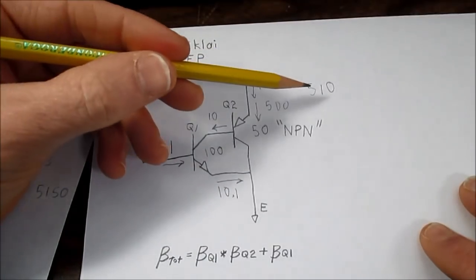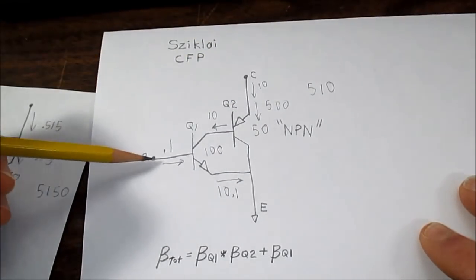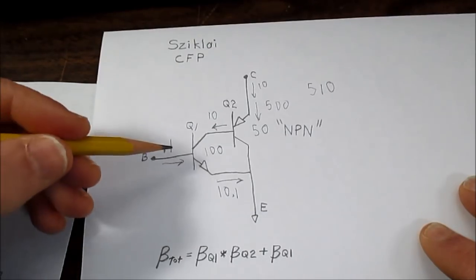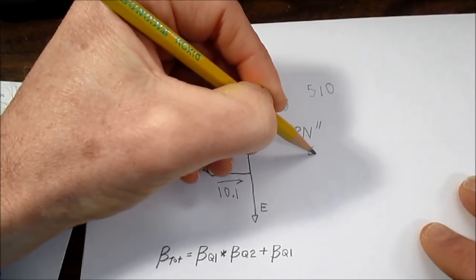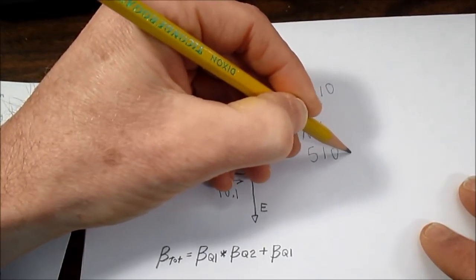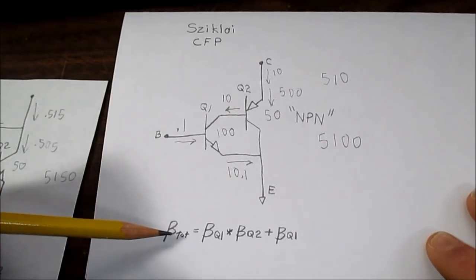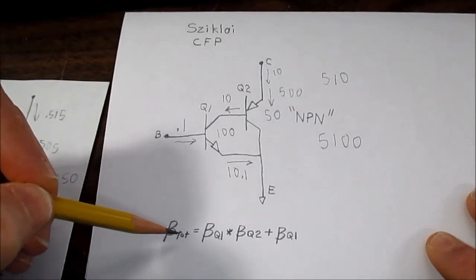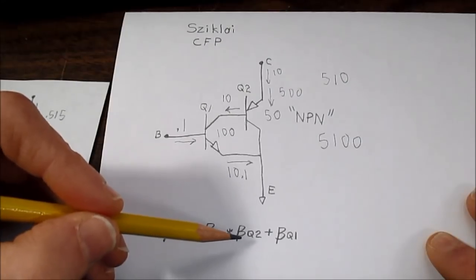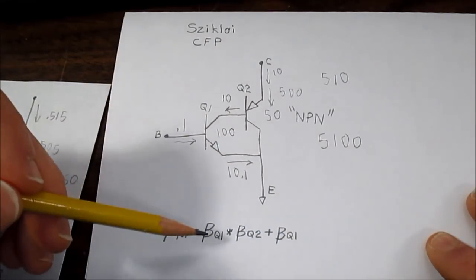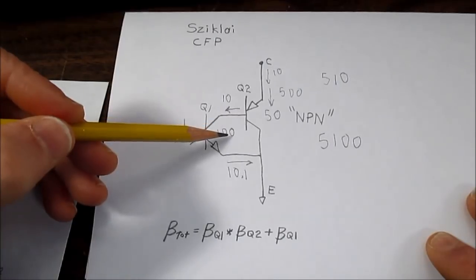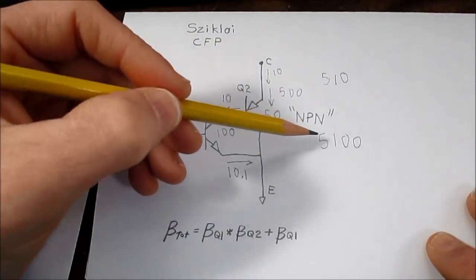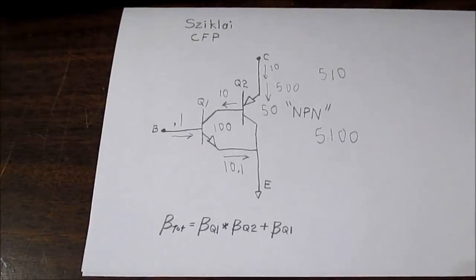The gain is the ratio of this, the current we're controlling to the current we're inputting to the base here. So it's 510 divided by 0.1, so the beta is equal to 5100. This is the current gain formula for the CFP pair. So we have total beta is equal to Q1 times Q2 plus Q1. So we have 100 times 50 which is 5000 plus 100 or 5100. So that works out.